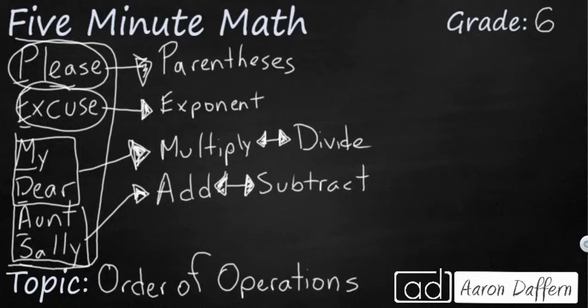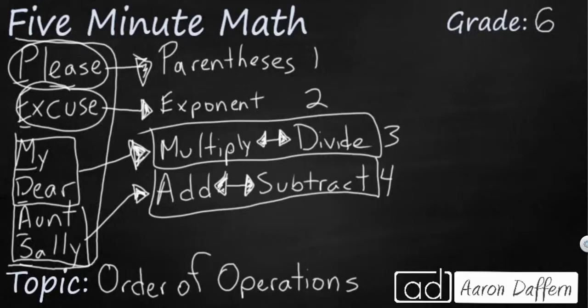So really there's four phases: parentheses, exponents, multiplication or division, and then addition or subtraction. Remember that these two are equal and these two are equal. Let's see what this looks like.